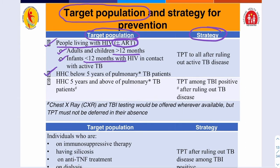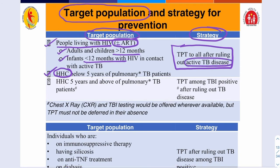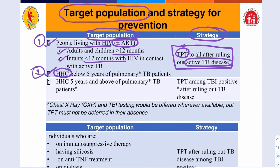Household contacts — HHC — below 5 years of age should be given TPT, that is tuberculosis preventive treatment or tuberculosis preventive therapy, after ruling out active tuberculosis disease. We rule out active TB first because in TPT we may use a single drug, and using a single drug in a patient who has active tuberculosis carries a high chance of developing drug resistance.